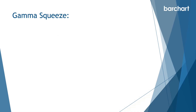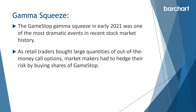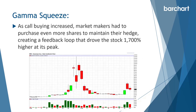But why is gamma important? We can get something called a gamma squeeze. Some of you may remember this from back in 2021 — the GameStop gamma squeeze — one of the most dramatic events in recent stock market history. As retail traders bought large quantities of out-of-the-money call options, market makers had to hedge their risk by buying shares of GameStop. As call buying increased, market makers had to purchase even more shares to maintain their hedge, creating a feedback loop that drove the stock 1,700% higher at its peak.